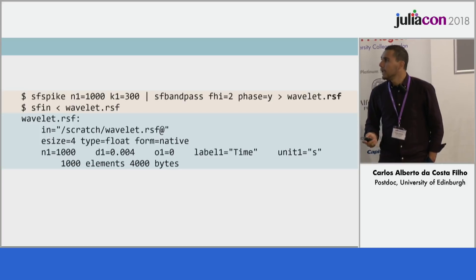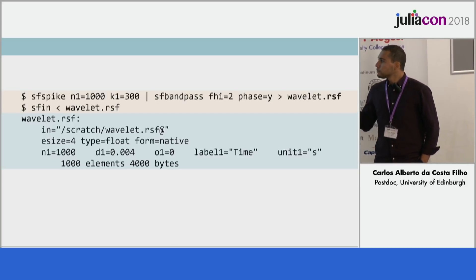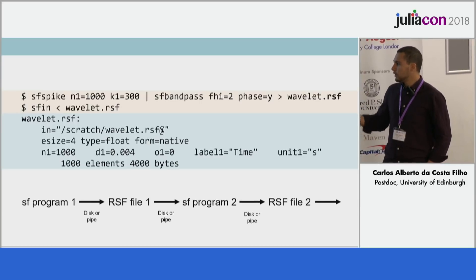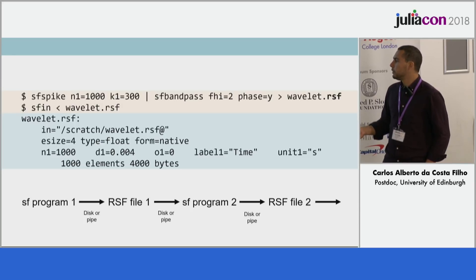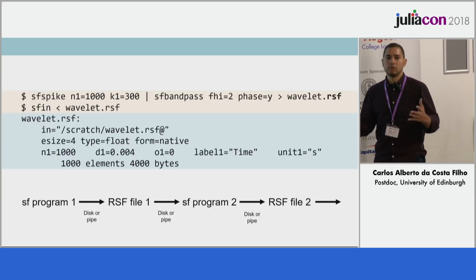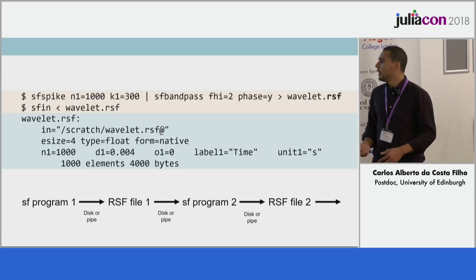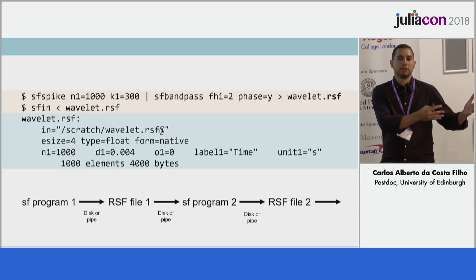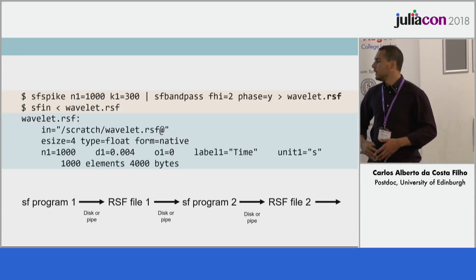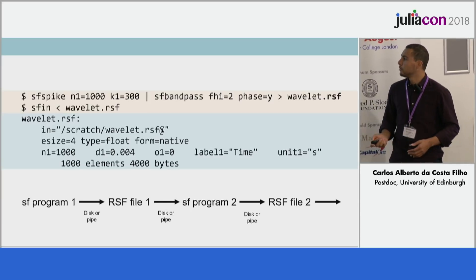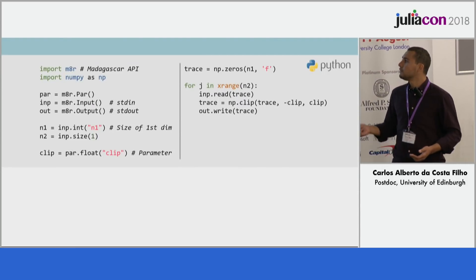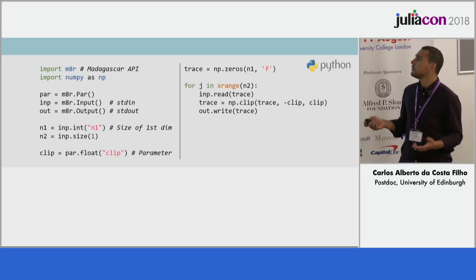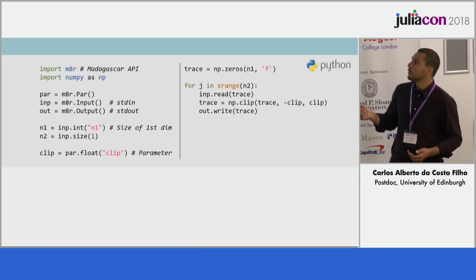So if you want to start playing around with Madagascar, all you need is an SF program, give it an RSF file through a disk or a pipe, then pipe it into another program, and so on. That's how we go from nothing, or a little bit of data, into images of the subsurface. Sometimes we don't want to do this in the terminal — we want to do it inside a Python session, so we need to use the Madagascar Python API.